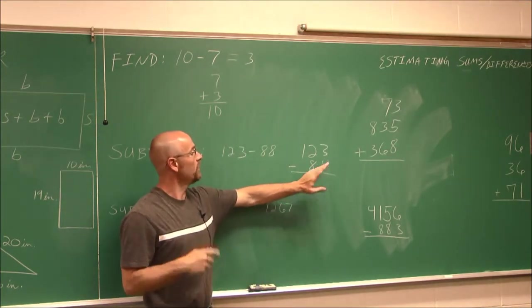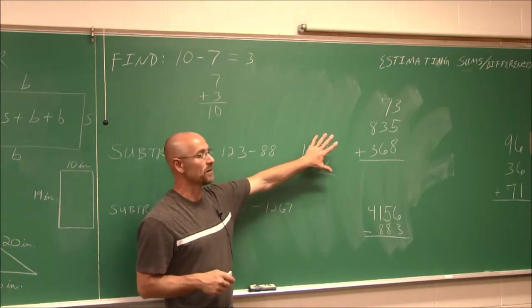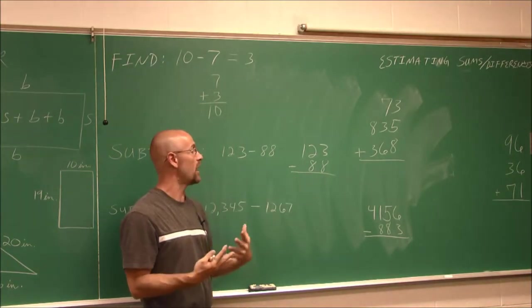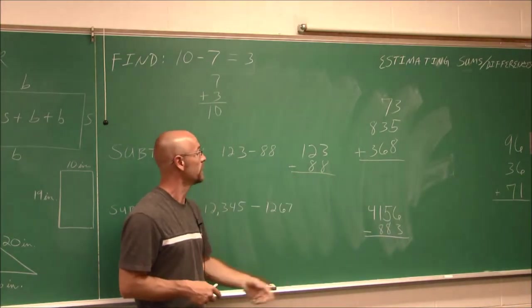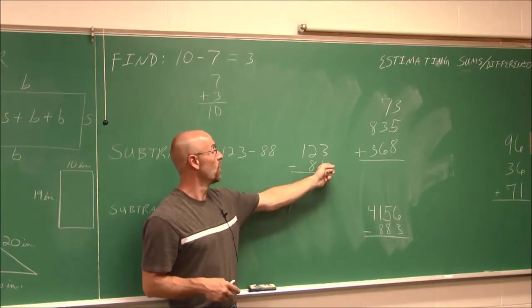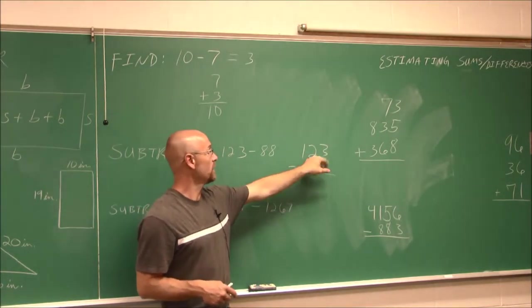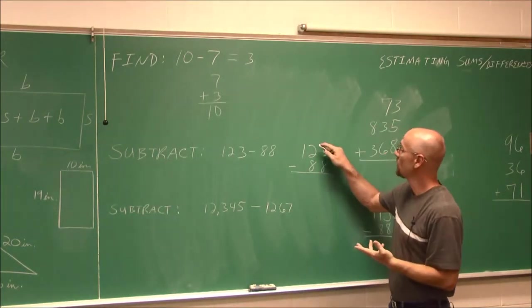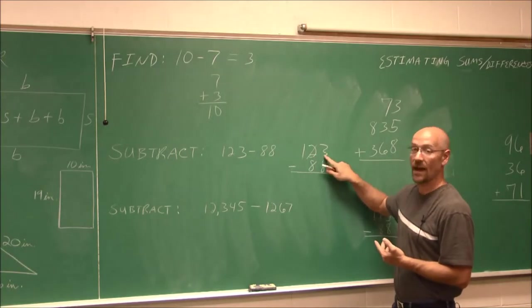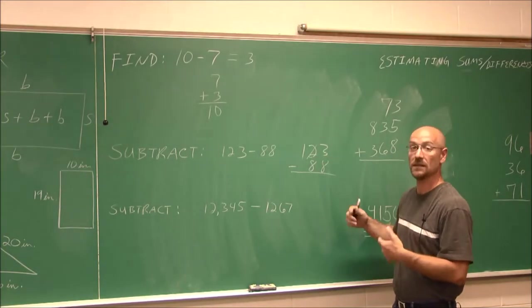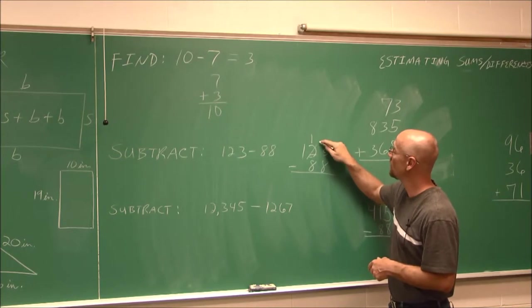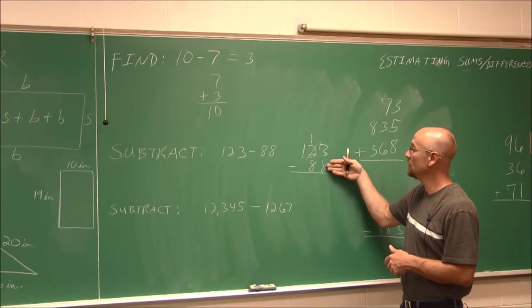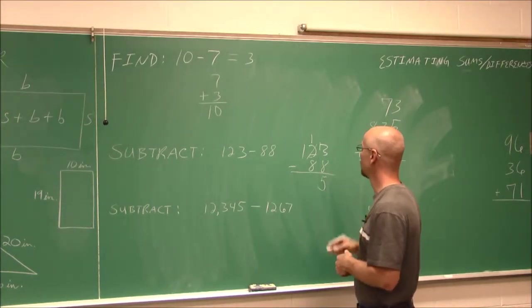Now, in the previous video when we did addition, if it summed to more than 9, we had to do some carrying. Well, when we're doing subtraction, we have to do the opposite. We have to do what's called borrowing. If the bottom number is more than the top, we can't just find the difference. We can't just subtract. What we have to do is we have to borrow. So I have to borrow from the tens place, so I have enough ones to be able to take away 8. So I borrow one from it, and I carry it over here. Now I have 13 ones. 13 minus 8 is 5.